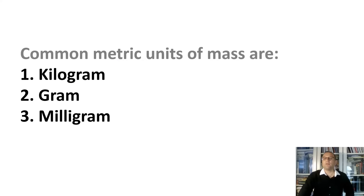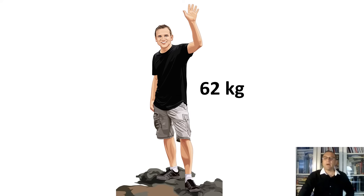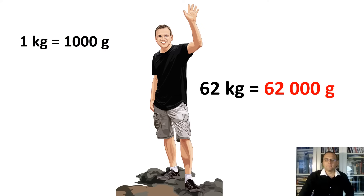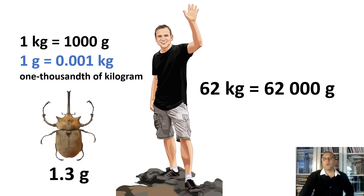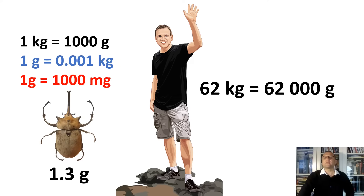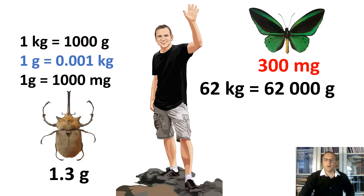Now let's move on to units of mass. The average adult has a mass of about 62 kilograms. Each kilogram equals 1,000 grams, so 62 kilograms equals 62,000 grams — no calculator needed. One gram is one thousandth of a kilogram. One gram equals 1,000 milligrams. We measure milligrams to measure very tiny or very light things.